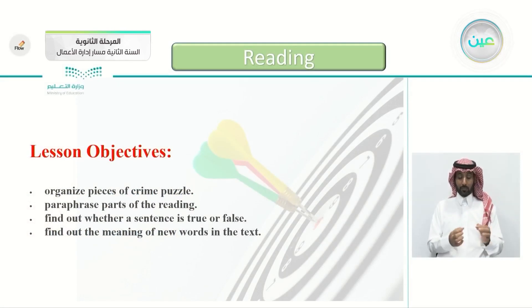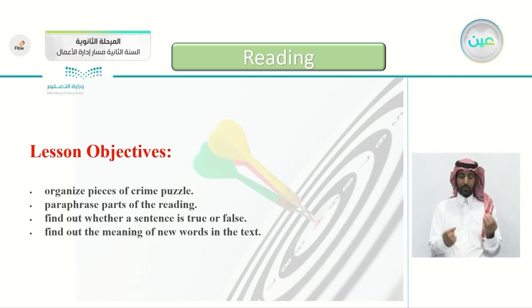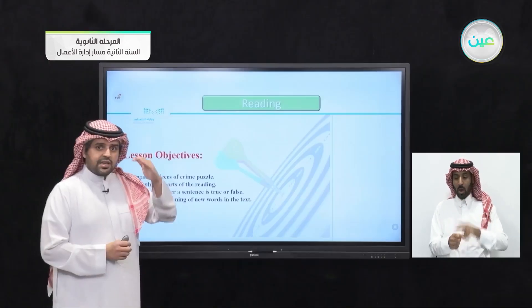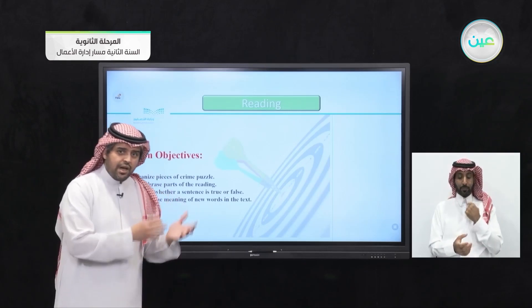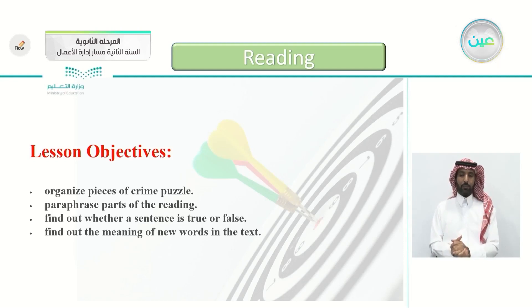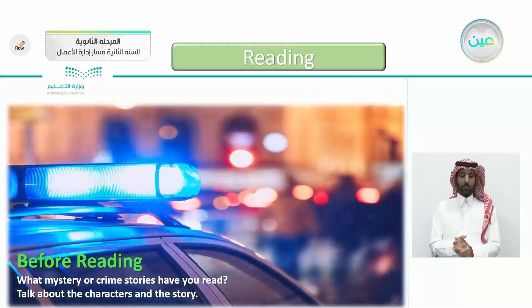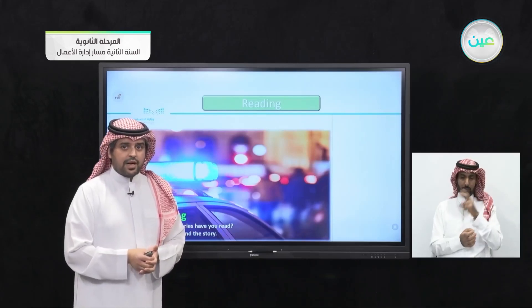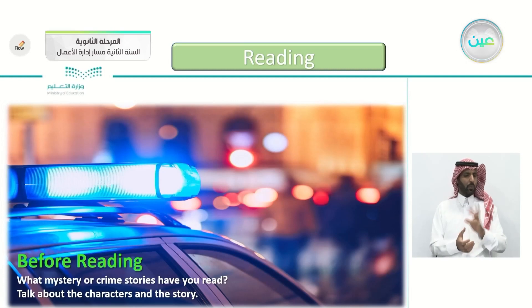These are the objectives for today's lesson: organize pieces of a crime puzzle, paraphrase parts of the reading — paraphrasing means saying it in other words, maybe even shortening it a little — find out whether a sentence is true or false, and find the meaning of new words in the text. Before reading, from the picture of the police car siren, you can see this article will be talking about criminals and crime.